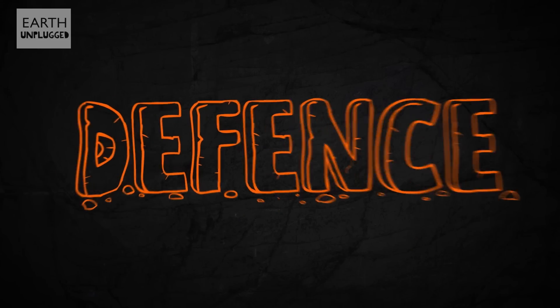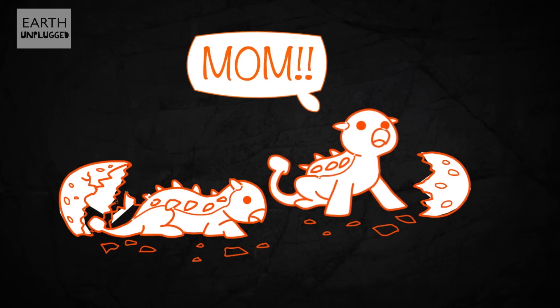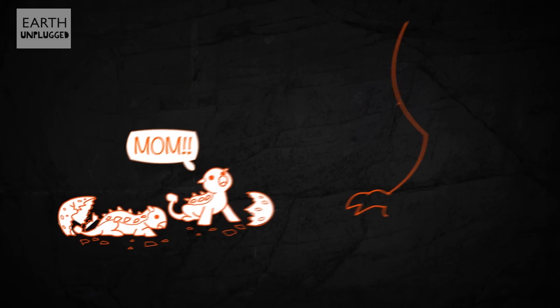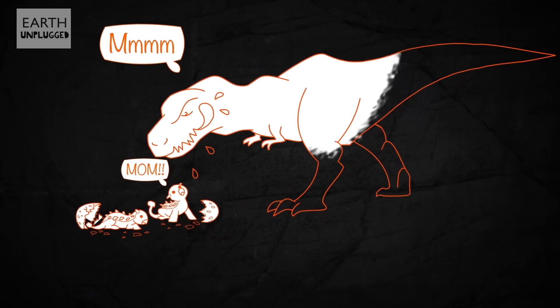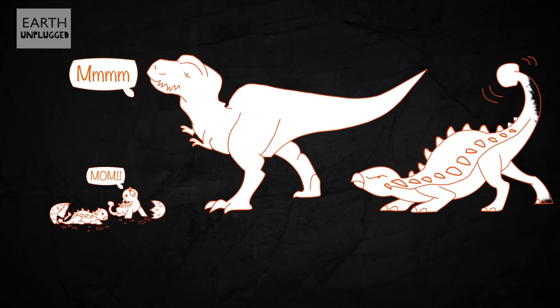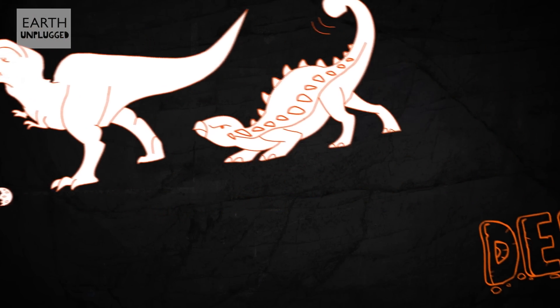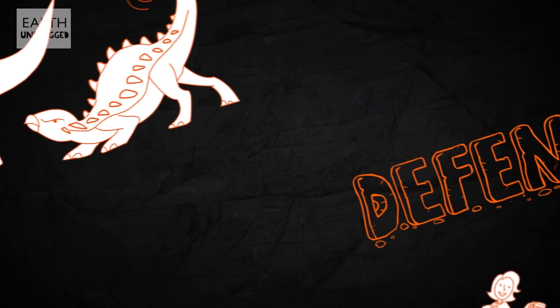Moms will also defend their babies from attack. Euoplocephalus babies, when they hatched from their eggs, were tiny and vulnerable. An easy snack for a hungry T-Rex, you might think. But these moms grouped their babies together, and even a T-Rex may have thought twice about attacking the babies of a six-meter-long, two-ton, uber-armored, tail-club-swinging Euoplocephalus mom.